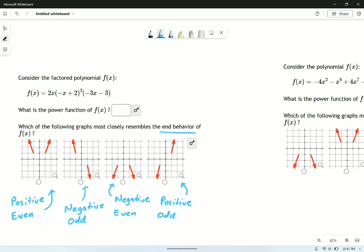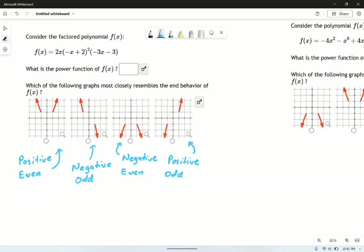The end behavior is what the graph looks like far away from the center. Where is it going as you get into very big values of x? Is it going up or down? And we have these four categories. They're called positive even, negative odd, negative even, and positive odd.